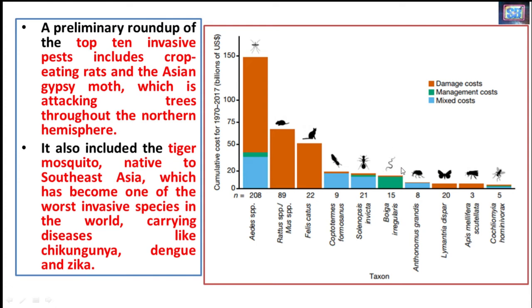Then we have the screwworm fly, which is a parasitic fly that feeds on the larvae and tissues of living organisms. The last one listed is the honey bee species, which is also an invasive species in areas where it is not native. These are the top 10 global invasive pests which cost billion-dollar losses, particularly in the Americas, for the period 1970 to 2017. Mosquitoes, rodent species, domestic cats, fire ants, and Formosan termites are among the top five.